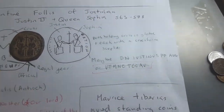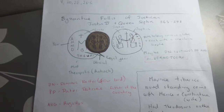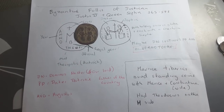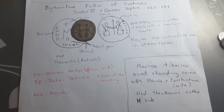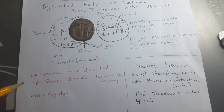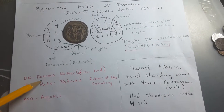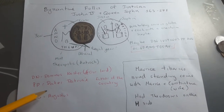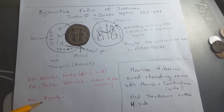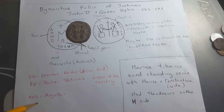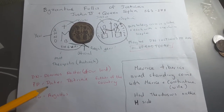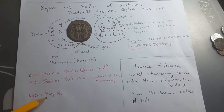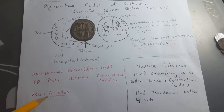This is based on the previous Roman coins, which Byzantine coins are actually a continuation of. The DN means Dominus Noster, which is Latin for 'Our Lord', followed by his name Justinus. PP is Pater Patriae, which means 'Father of the Country'.